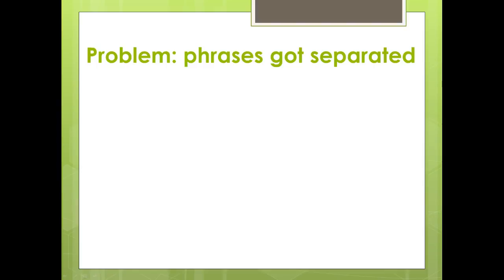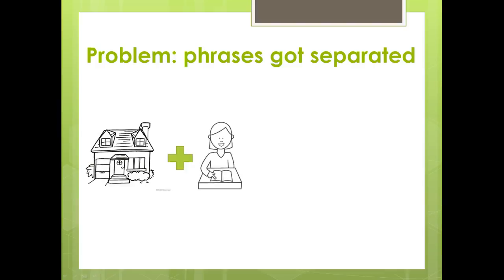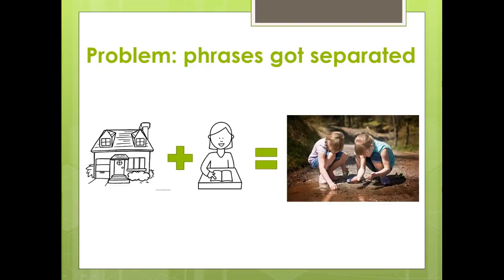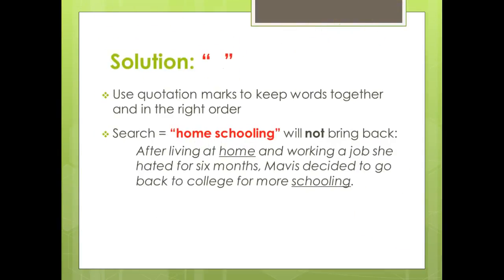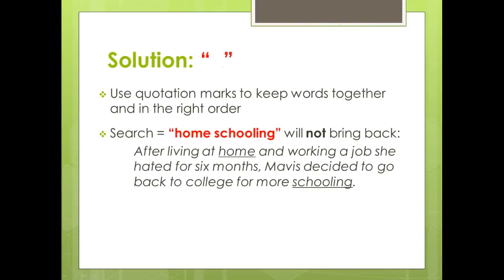Another problem that we saw is that phrases often don't stay together. Phrases are two or more words that when put together take on a new meaning other than their individual words. For example, home and school are individual words with their own meanings, but put together you have homeschooling, which takes on a meaning all of its own. In order to retain that meaning you want to put things in quotes. Anytime you have two or more words that you want to stay together, put them in quotes. That tells the database it needs to find those words together and in that exact order — if it doesn't, it will not consider it a match.